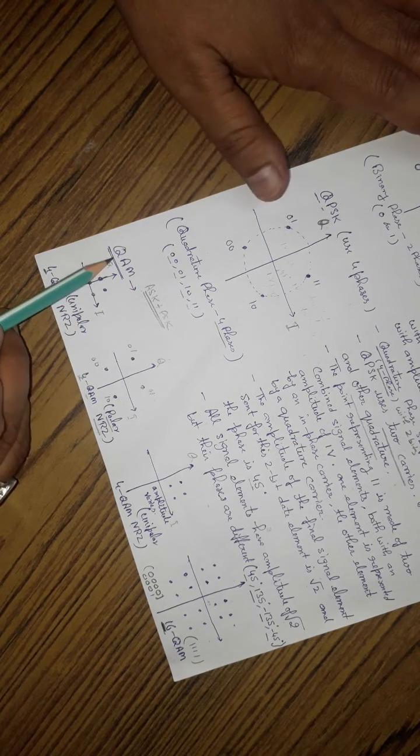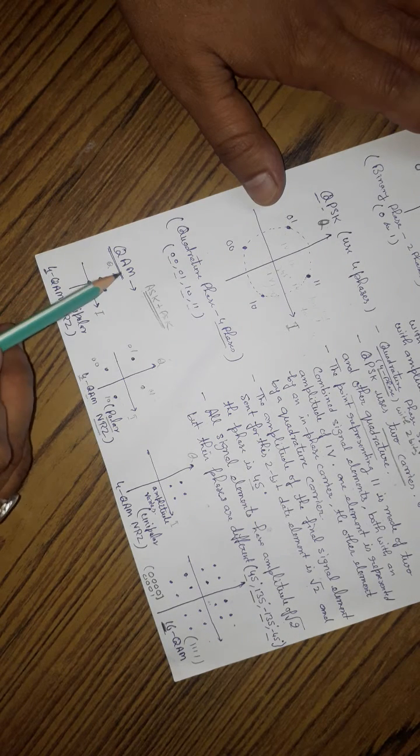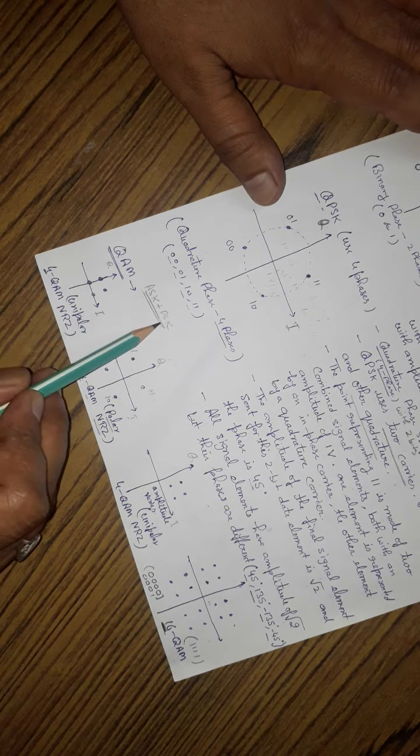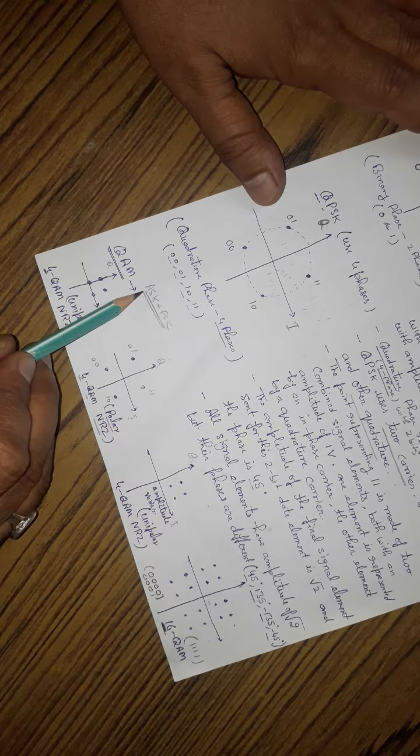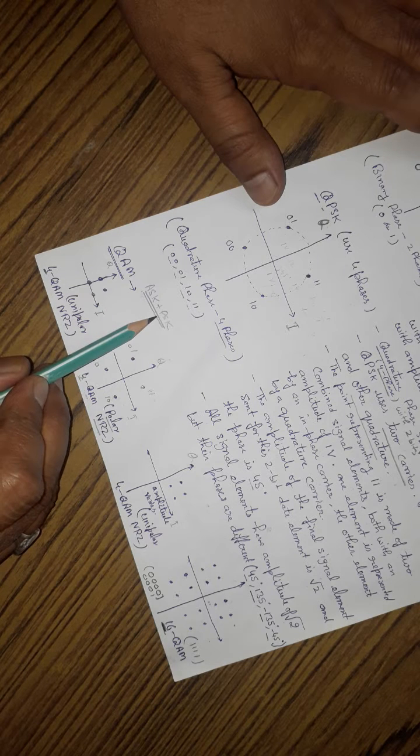The next one is a constellation diagram for QAM, quadrature amplitude modulation. As QAM is a combination of ASK and PSK, both amplitude and phase will change.